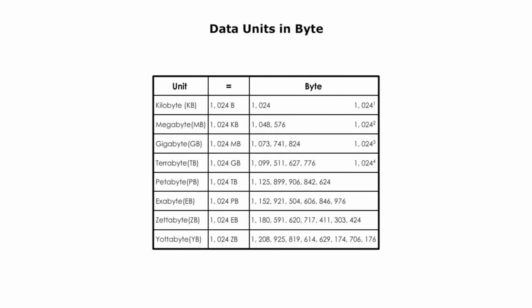Now take a look at the chart. Data unit in bytes: kilobyte — kilo means 1,000, but one kilobyte is 1,024 bytes to be exact. Megabyte: one megabyte is 1,024 to the second power bytes. One gigabyte is 1,024 to the third power bytes.